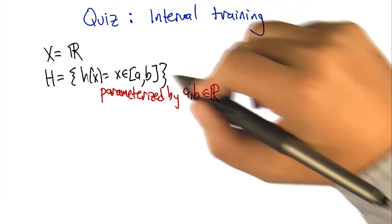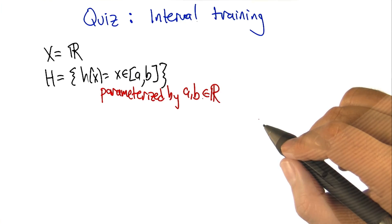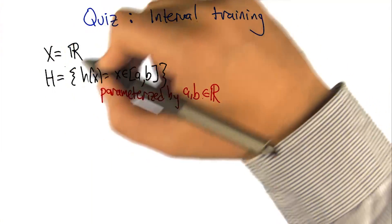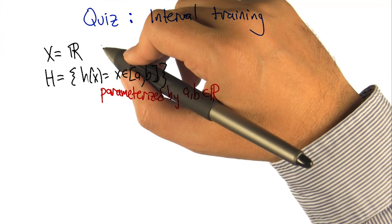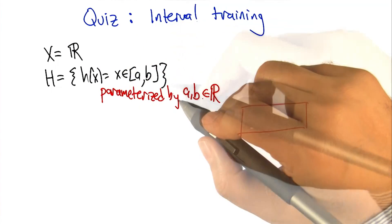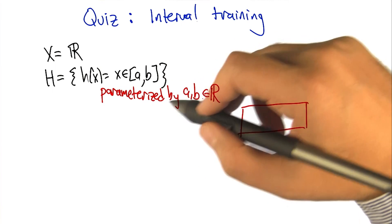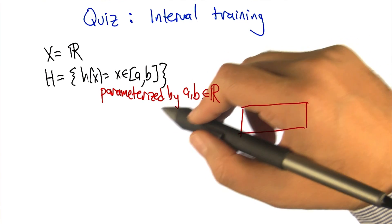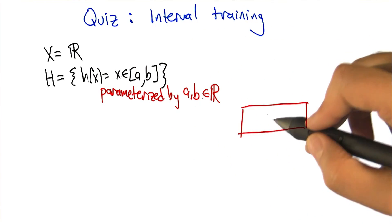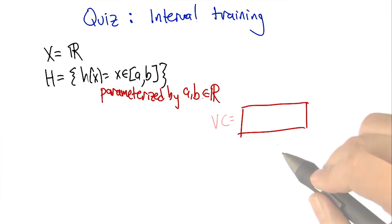So how do we figure out what the VC dimension is? We want to know what is the largest set of inputs that we can label in all possible ways using hypotheses from H. I want you to figure that out—the size of the largest set that we can shatter, that we can label in all possible ways using these hypotheses, and then write it as an integer in this box.